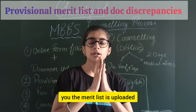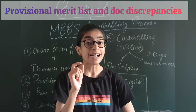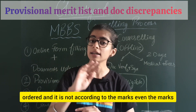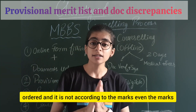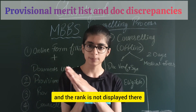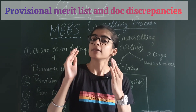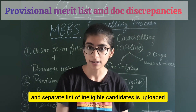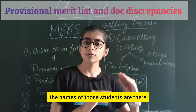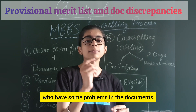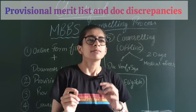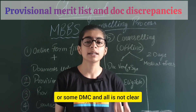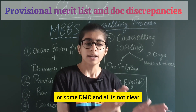The merit list is alphabetically ordered — it is not according to marks, and the marks and rank are not displayed there. A separate list of ineligible candidates is also uploaded, which contains the names of students who have problems with their documents. For example, if your UT pool quota or DMC is not clear, you have to upload it again or submit it there.